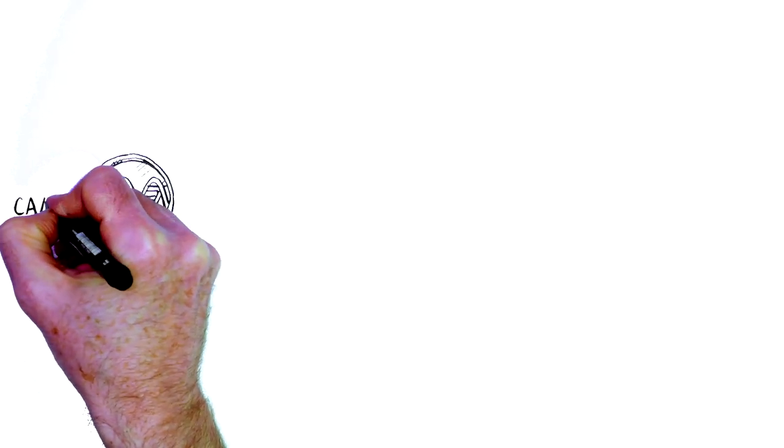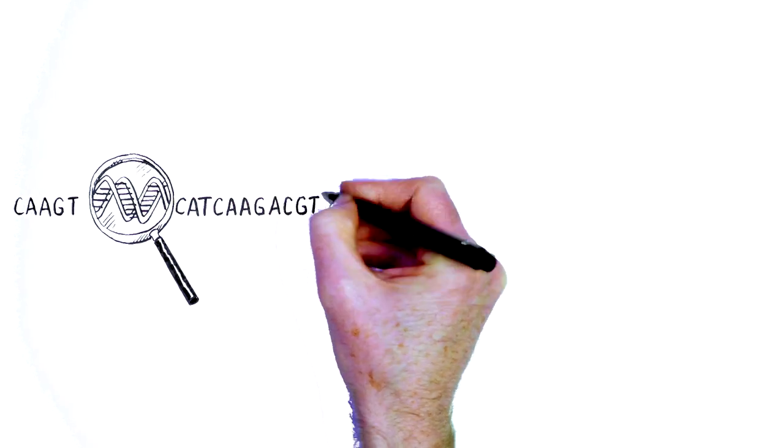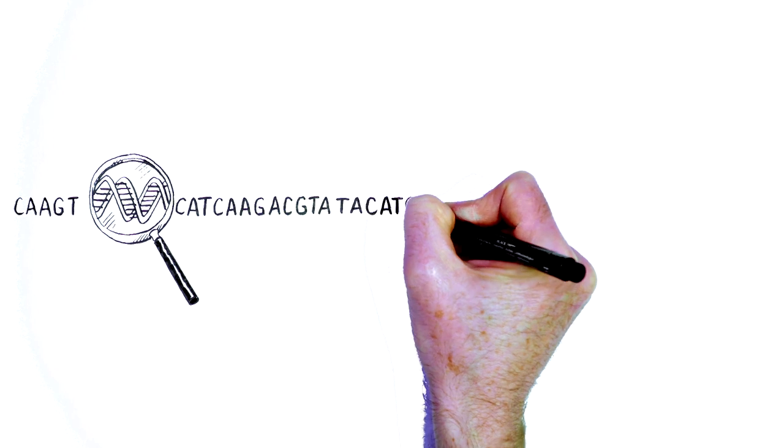Our DNA code is made up of four letters known as A's, C's, G's and T's in different sequences.